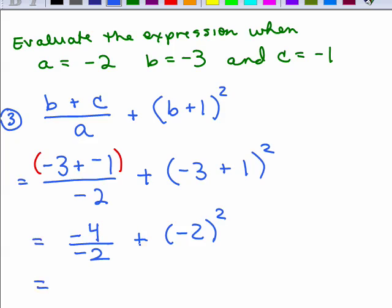You can independently do the division and square the number at the same time. Negative 4 divided by negative 2 — two negatives when you divide give a positive — so that's 2. And negative 2 times negative 2 is 4. So we have 2 plus 4, and the answer is 6.